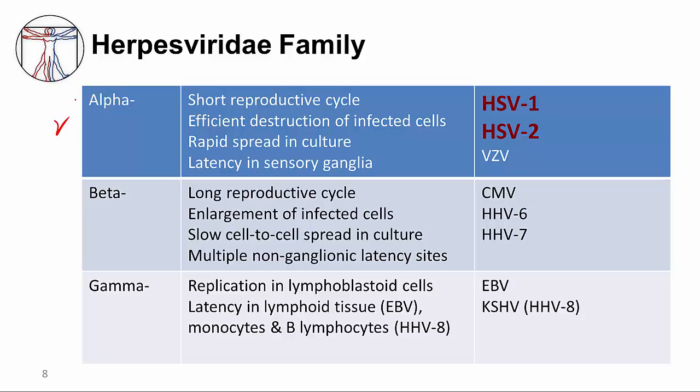These viruses have a short reproductive cycle — that is, they replicate quickly. As they replicate within a cell, they efficiently destroy the cell and then rapidly spread from cell to cell, or if in viral culture, they spread quickly in the viral culture. Another very important distinguishing feature of the alpha viruses is their ability to establish latency in sensory ganglia.